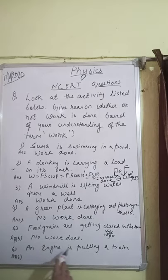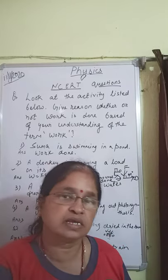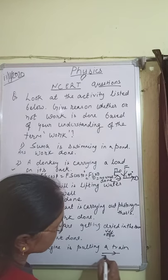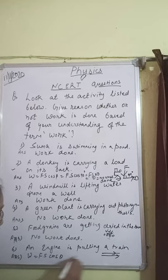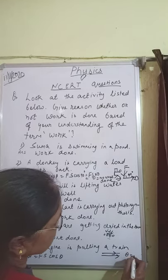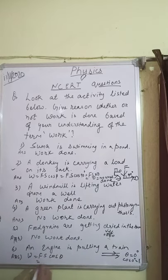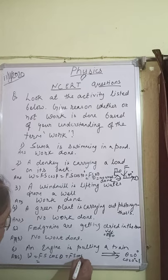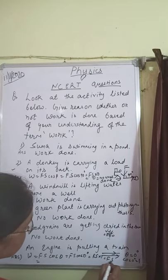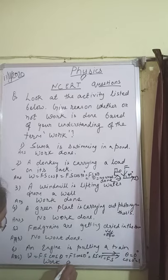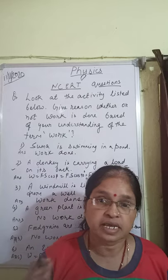Last: An engine is pulling a train. The engine is moving, force is applied in the forward direction, and the train is also moving forward. Using W = F S cos θ, since both force and displacement are parallel, θ = 0°, and cos 0° = 1. So W = F S × 1 = F S. There is work done.